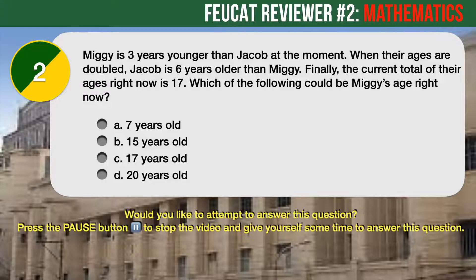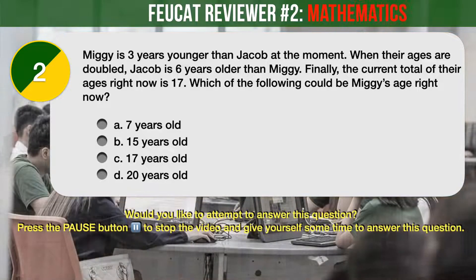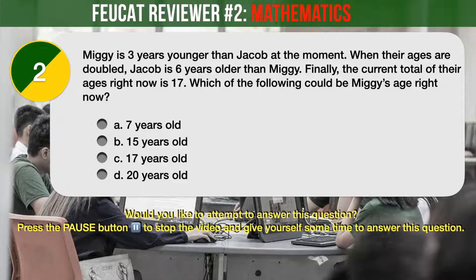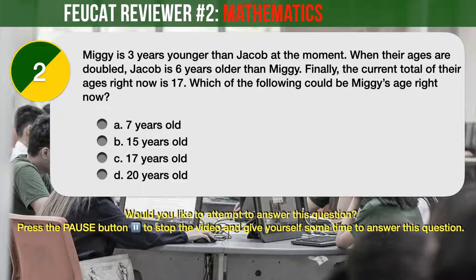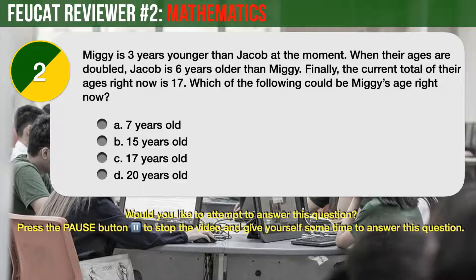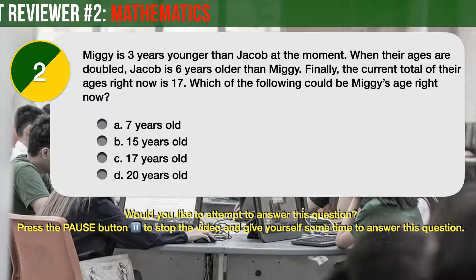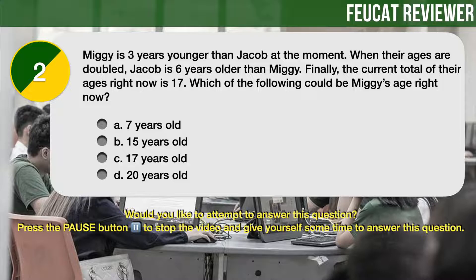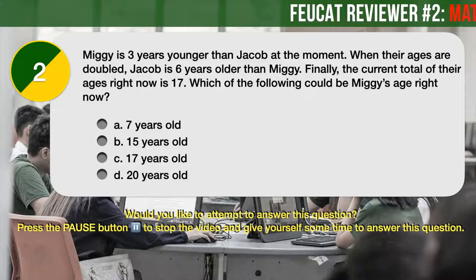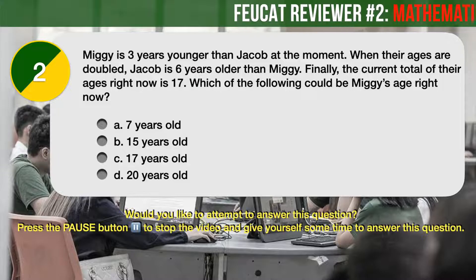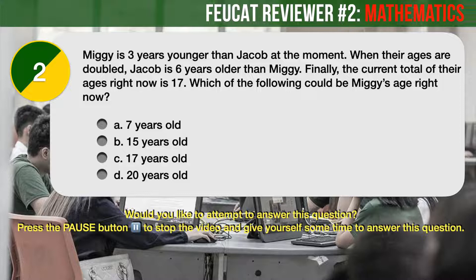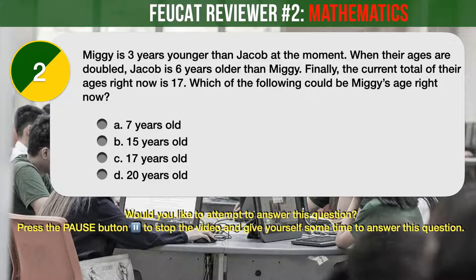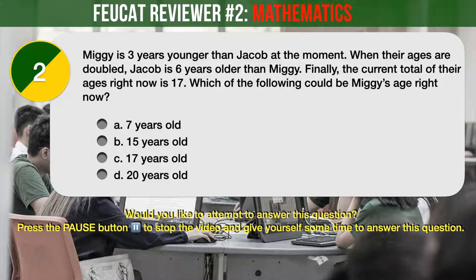Question Number 2. Miggy is 3 years younger than Jacob at the moment. When their ages are doubled, Jacob is 6 years older than Miggy. Finally, the current total of their ages right now is 17. Which of the following could be Miggy's age right now? A: 7 years old. B: 15 years old. C: 17 years old. D: 20 years old.